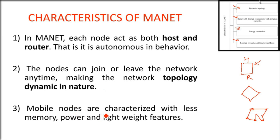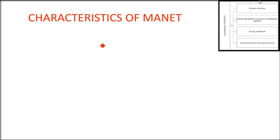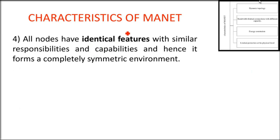Mobile nodes are characterized by less memory, because these are mobile devices — radios and mobile nodes. They have less memory, less power, and lightweight features; they can be phones or radios. There is also an energy constraint. All nodes have identical features — same characteristics, configuration, responsibilities, and capabilities — giving us a completely symmetric environment.